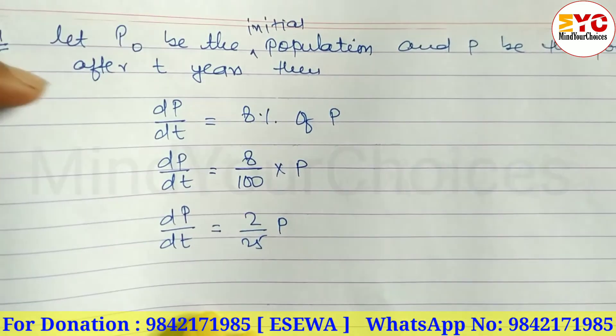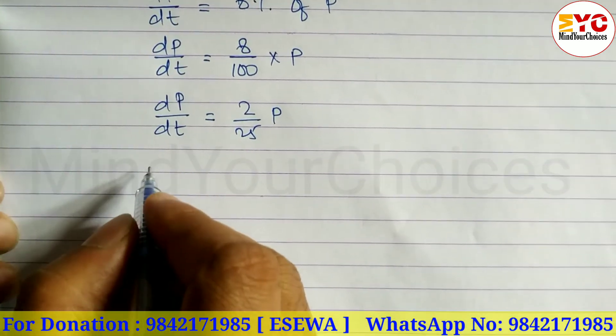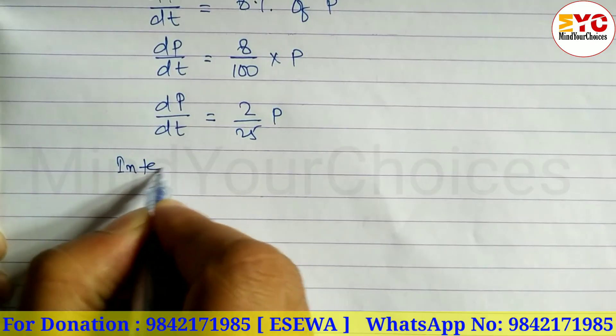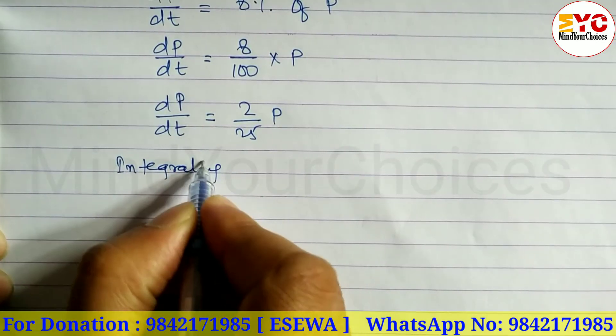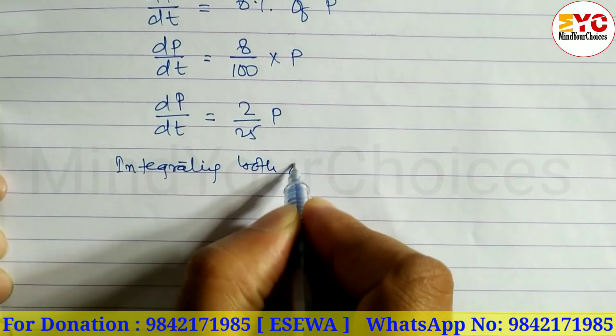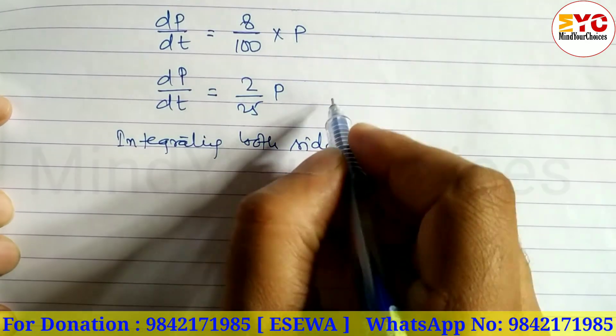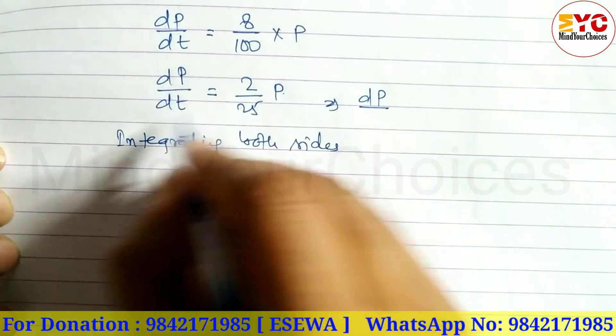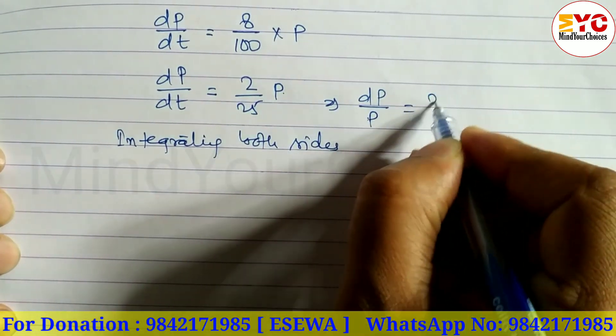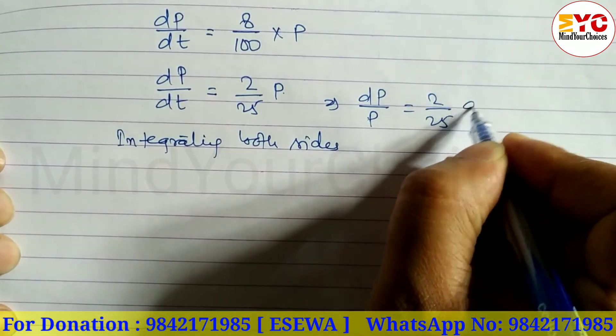Now we have to do integrating both sides. Before that let's rearrange: dP by P equal to 2 by 25 dT.